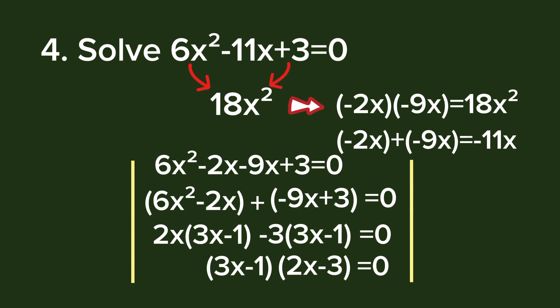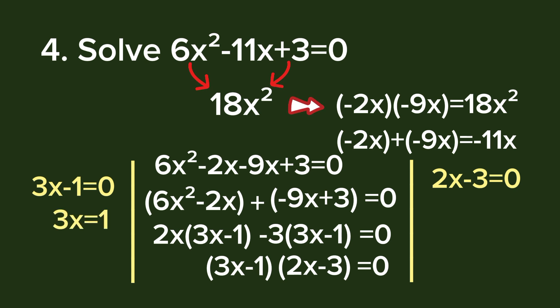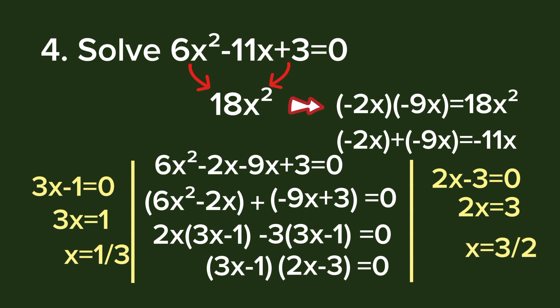Using the zero product property: 3x - 1 = 0 and 2x - 3 = 0. For 3x - 1 = 0: transposing gives 3x = 1, then multiplying both sides by 1/3 gives x = 1/3. For 2x - 3 = 0: transposing gives 2x = 3, multiplying both sides by 1/2 gives x = 3/2. These are the two solutions: x = 1/3 and x = 3/2.